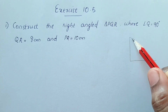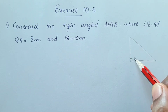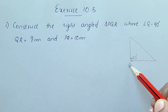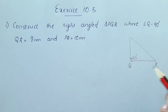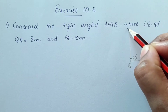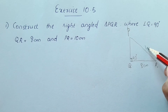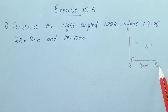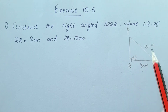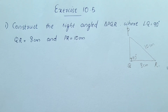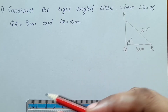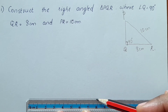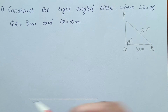Right-angled triangle. Angle Q is 90 degrees — this is Q. QR is 8 centimeters. And PR is 10 centimeters. Let me write it: QR is equal to 8 cm.